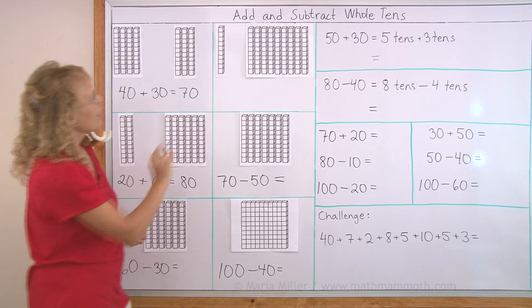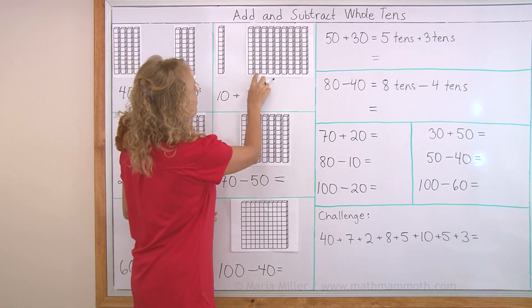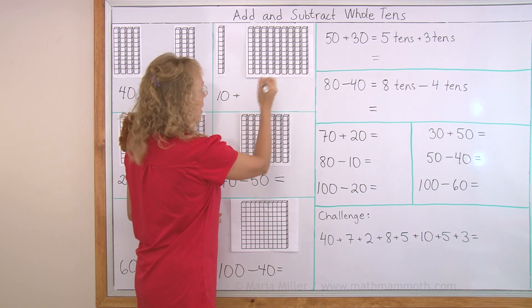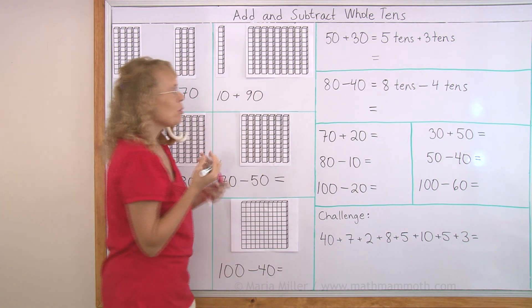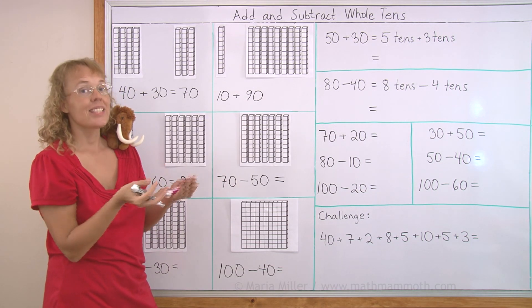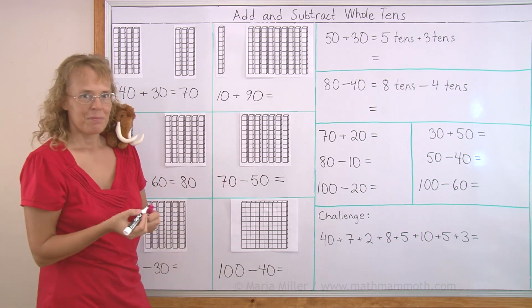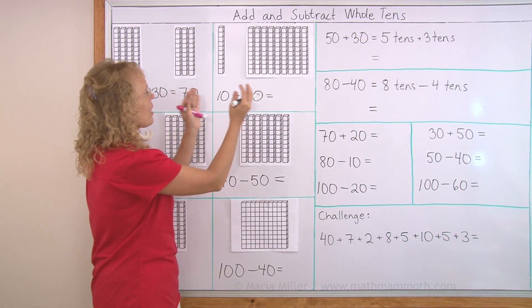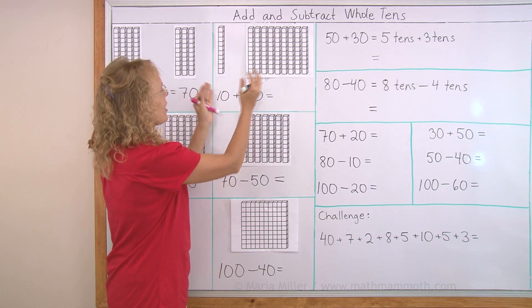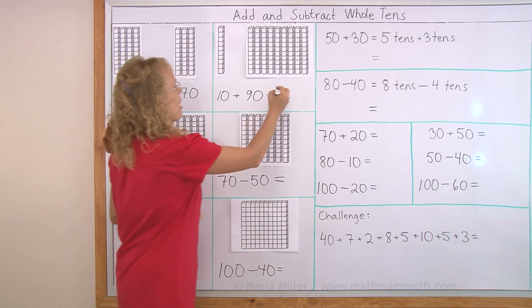Now let's try that one. Here's ten, right? And then here, nine tens. And what do we get when we add those? Ten and nine tens makes ten tens. But what do we call that? It's like sticking them all together and they snap together and they become this hundred flat. They become a hundred.